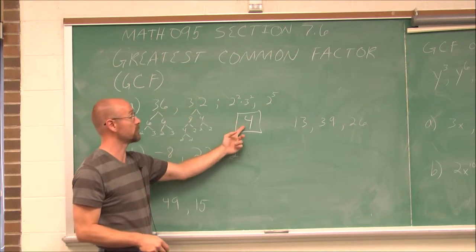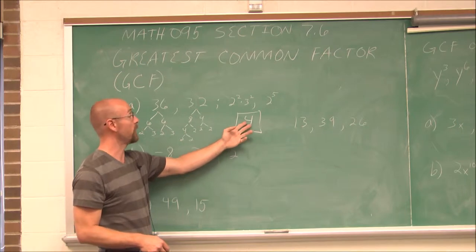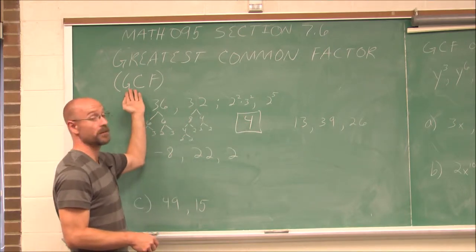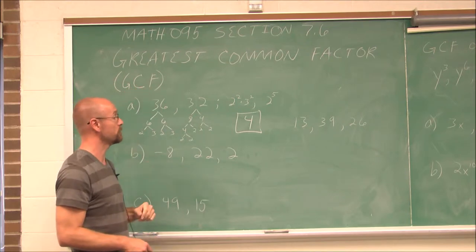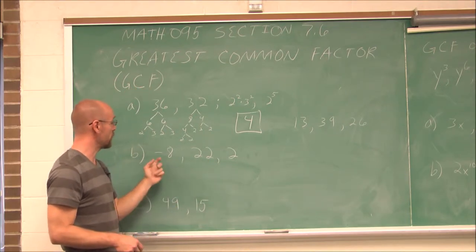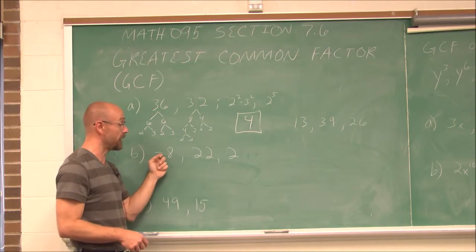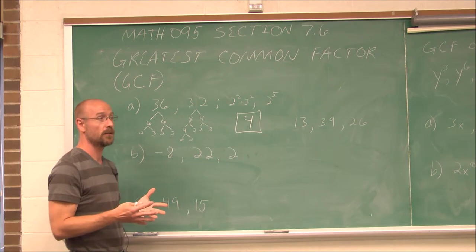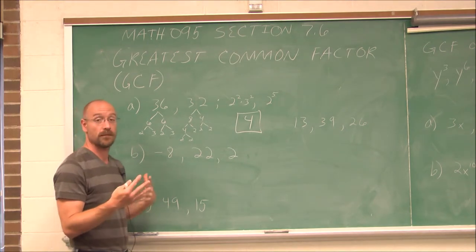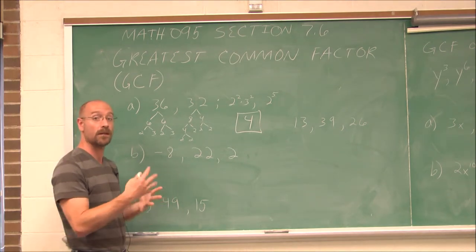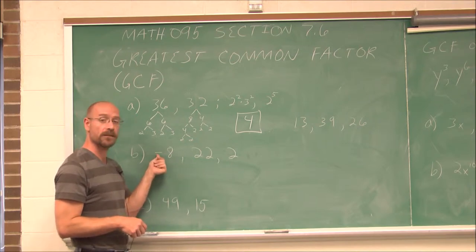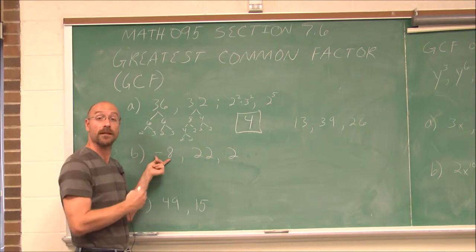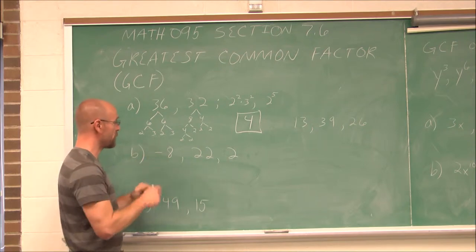So the greatest common factor of 36 and 32 is 4. Both of these numbers are divisible by 4, and no value larger than this will divide both of those numbers. Now, one thing to note: if we look at a negative value, we have to realize that every number is a product of 1, so whenever I see a negative, I can also think of it as a factor of negative 1.